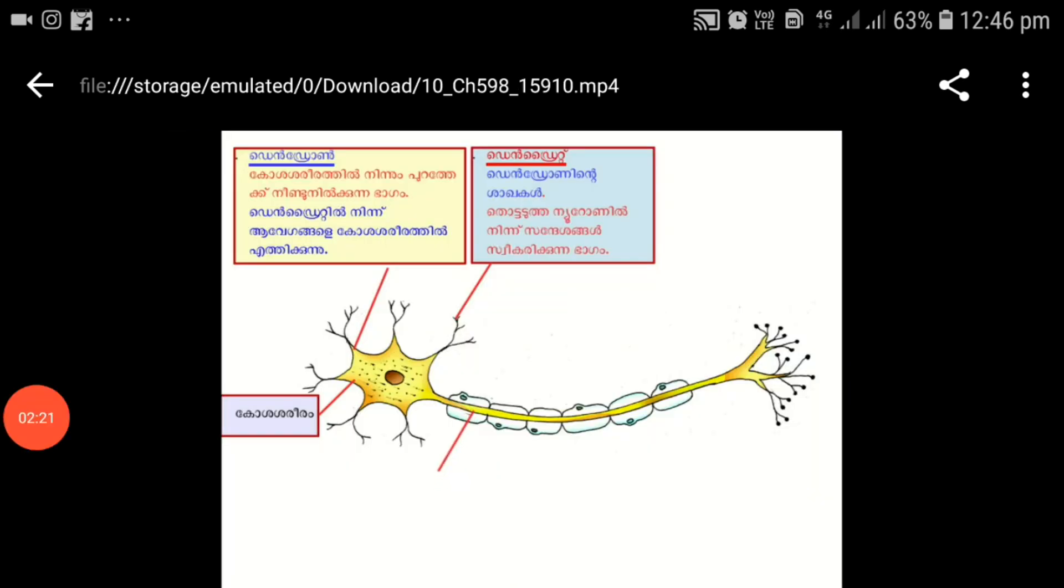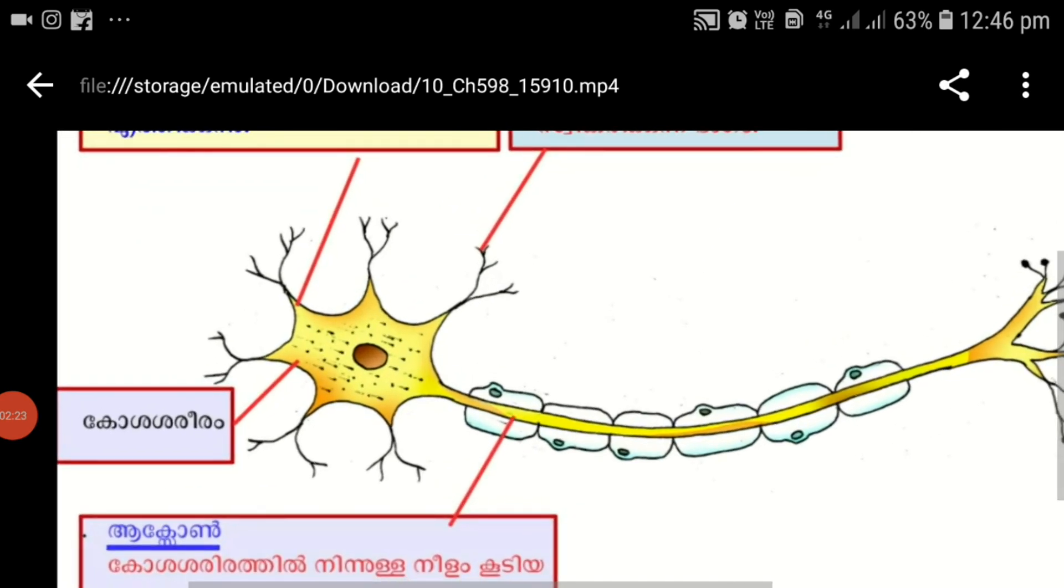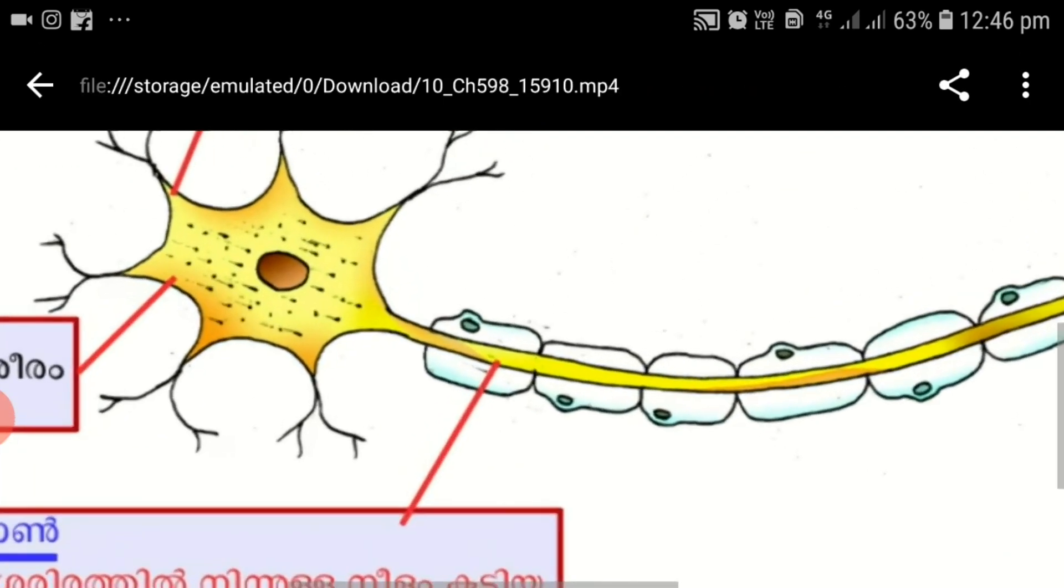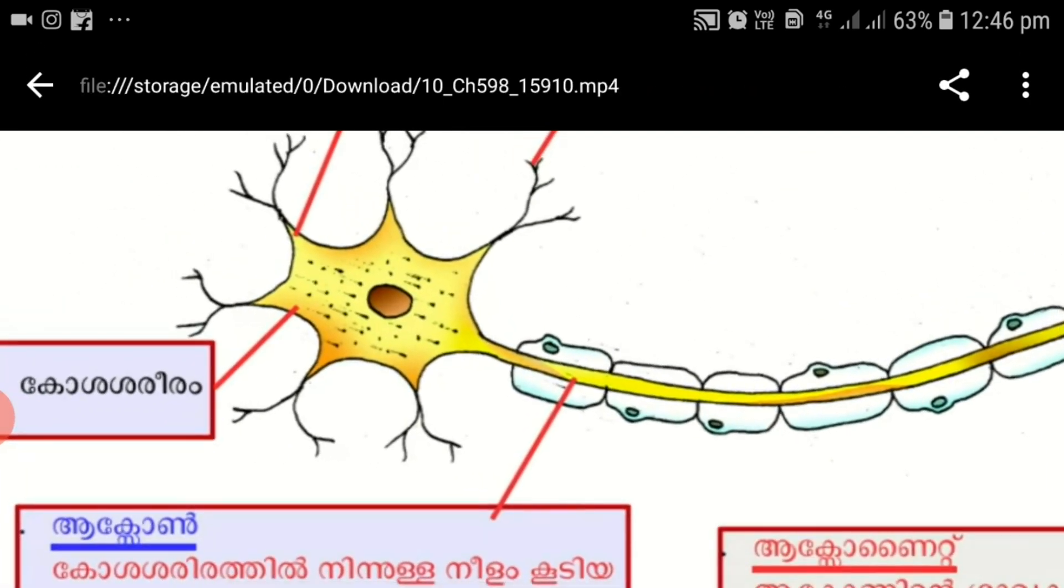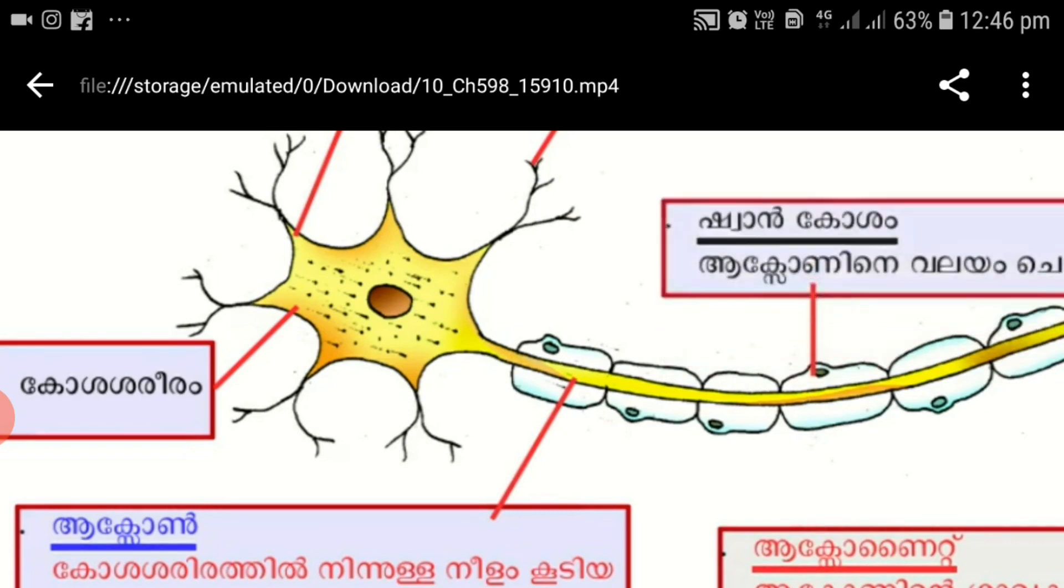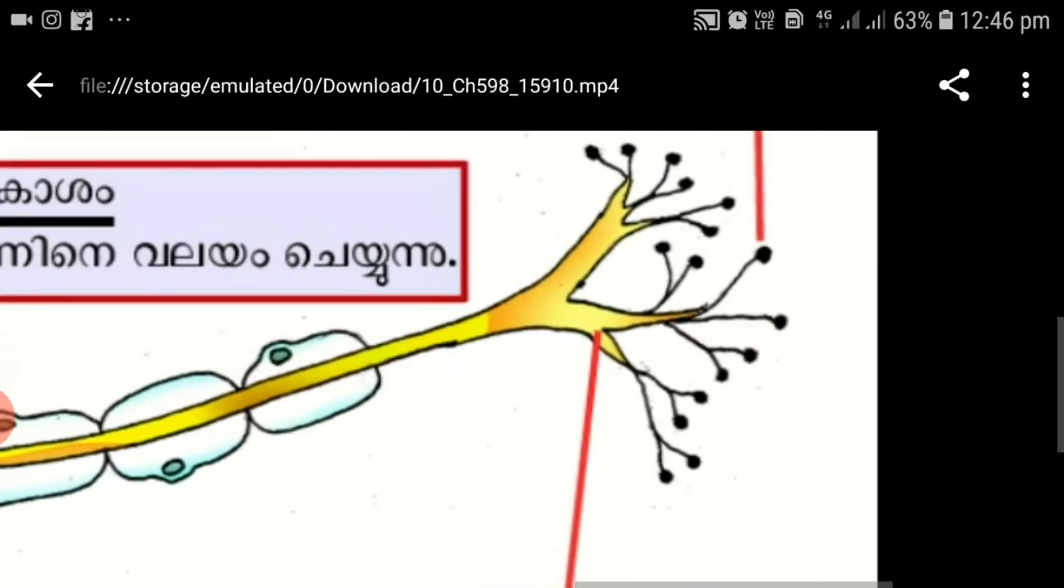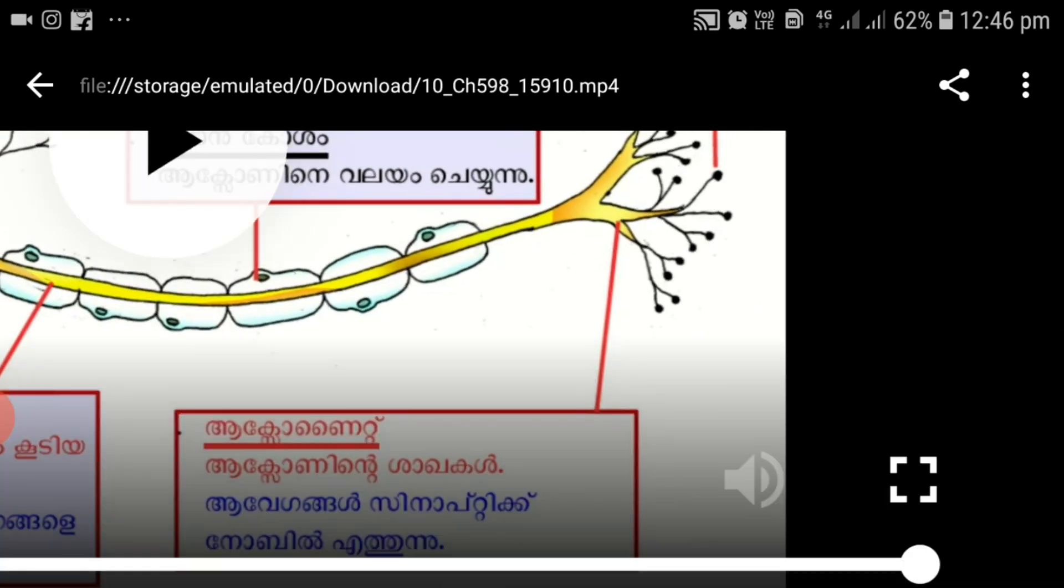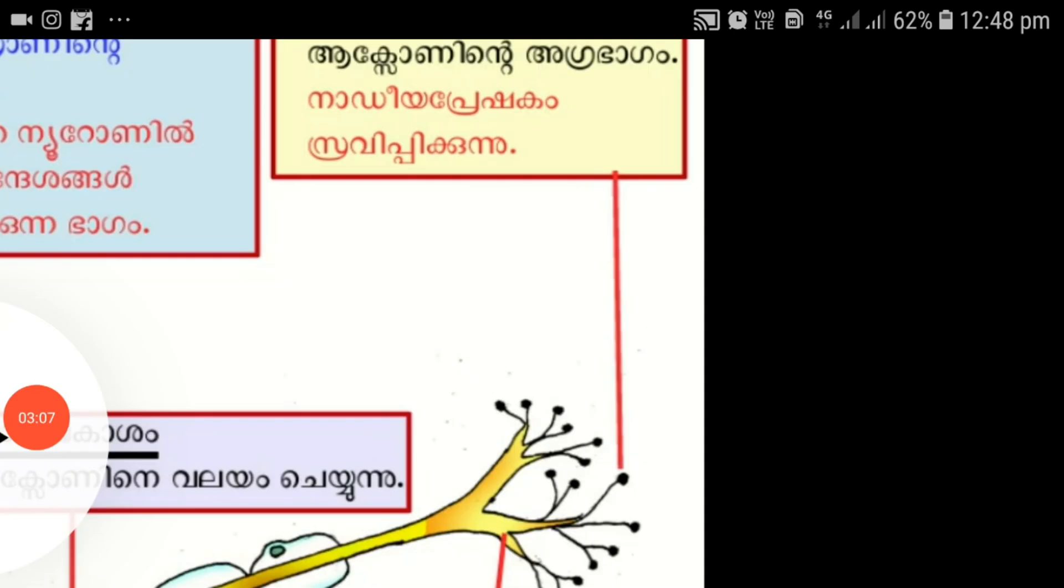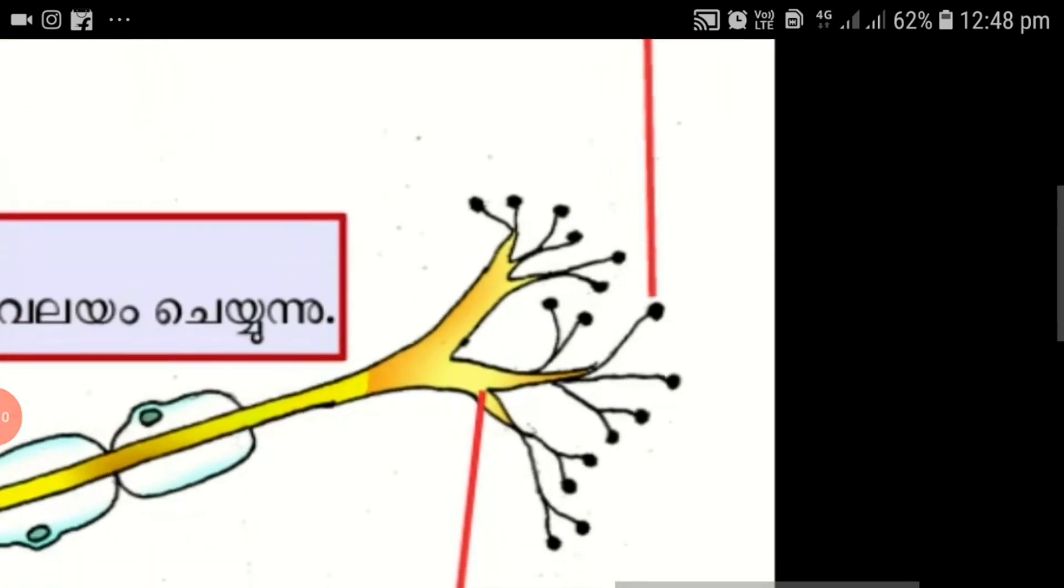Now from the cell body you can see a long filament-like structure which is called axon. And what happens to the axon at its end? You can see it gets divided into branches, and these branches are called axonites.